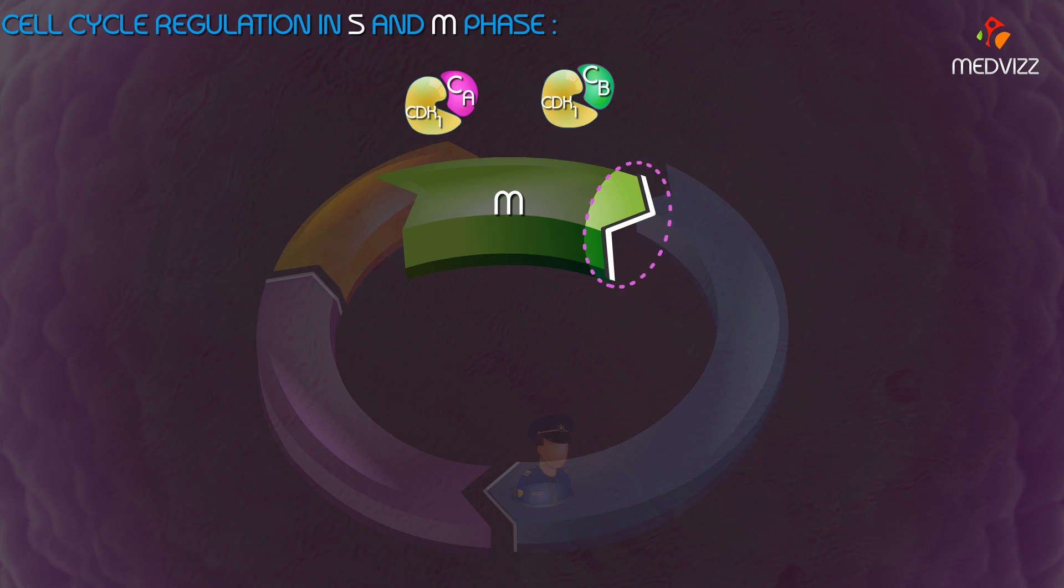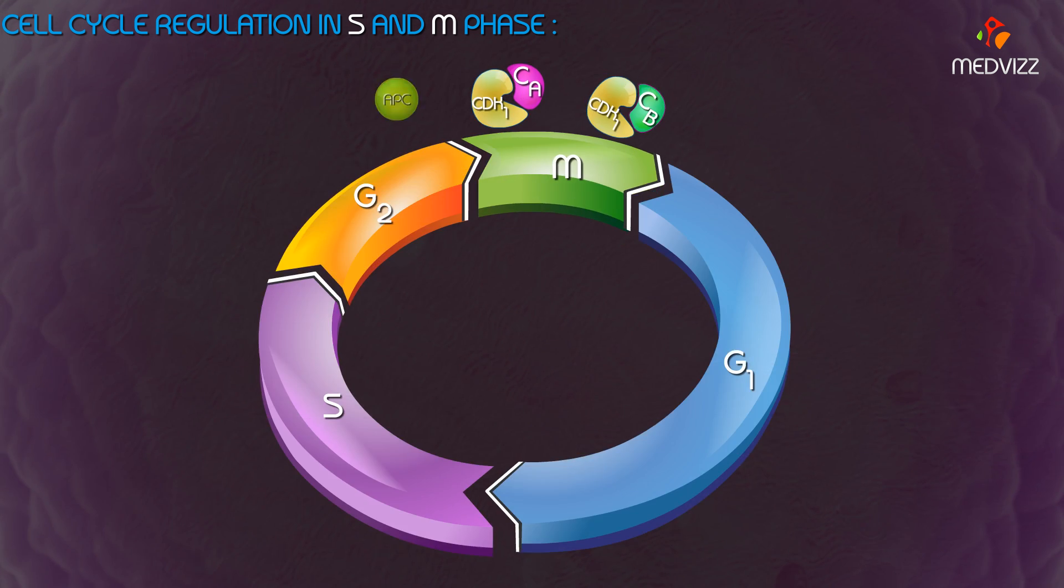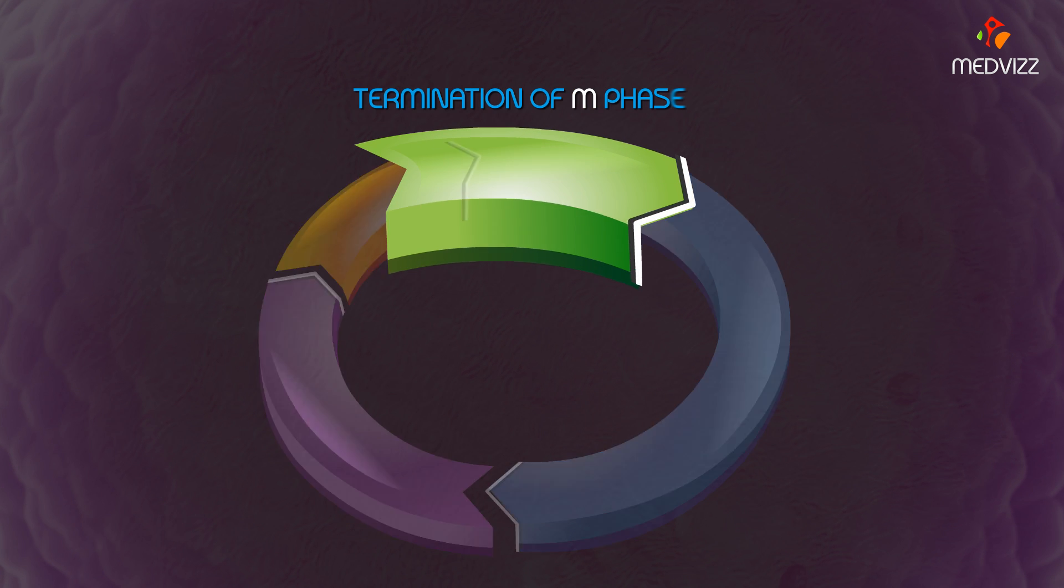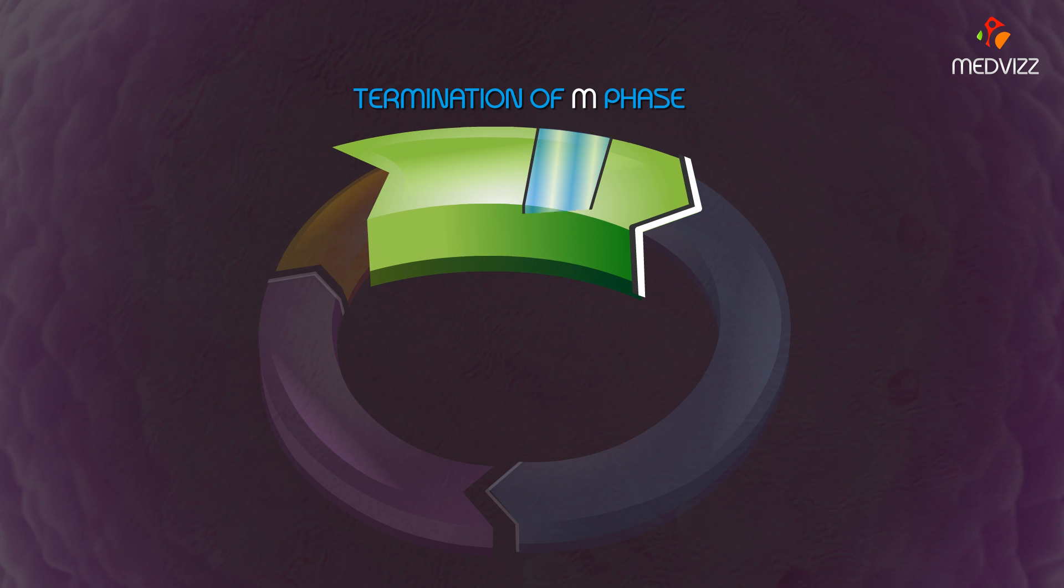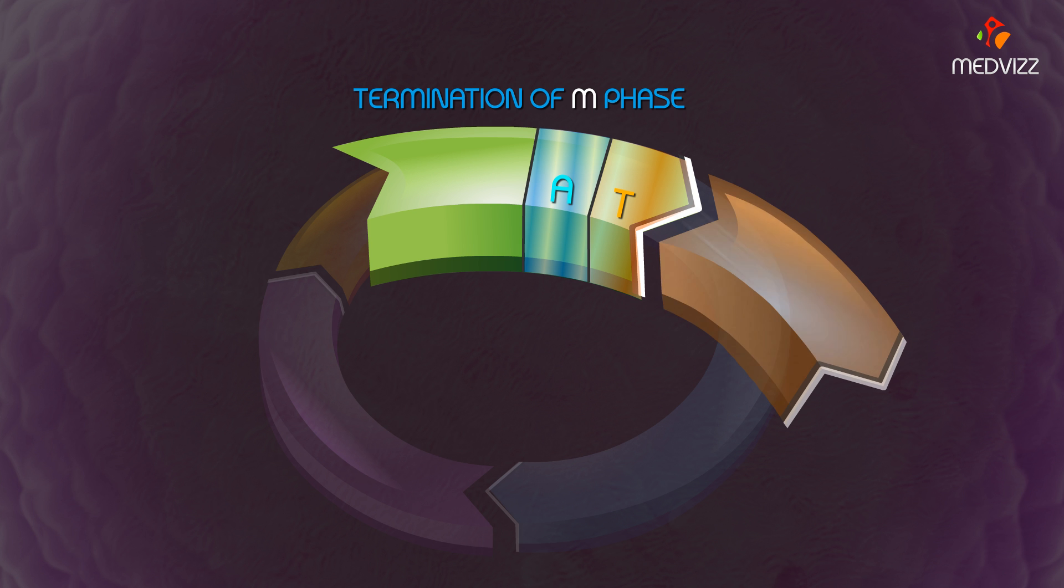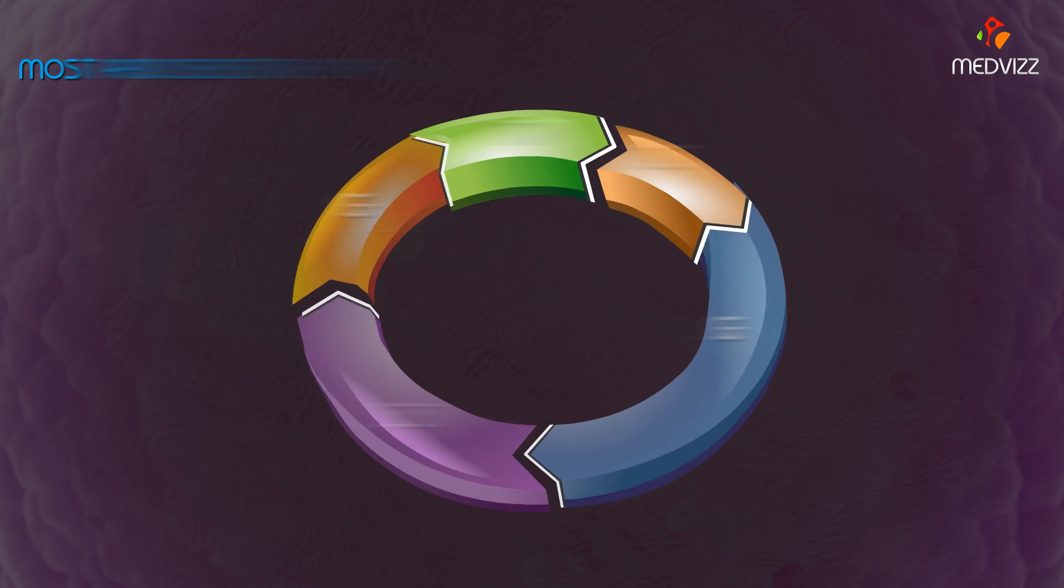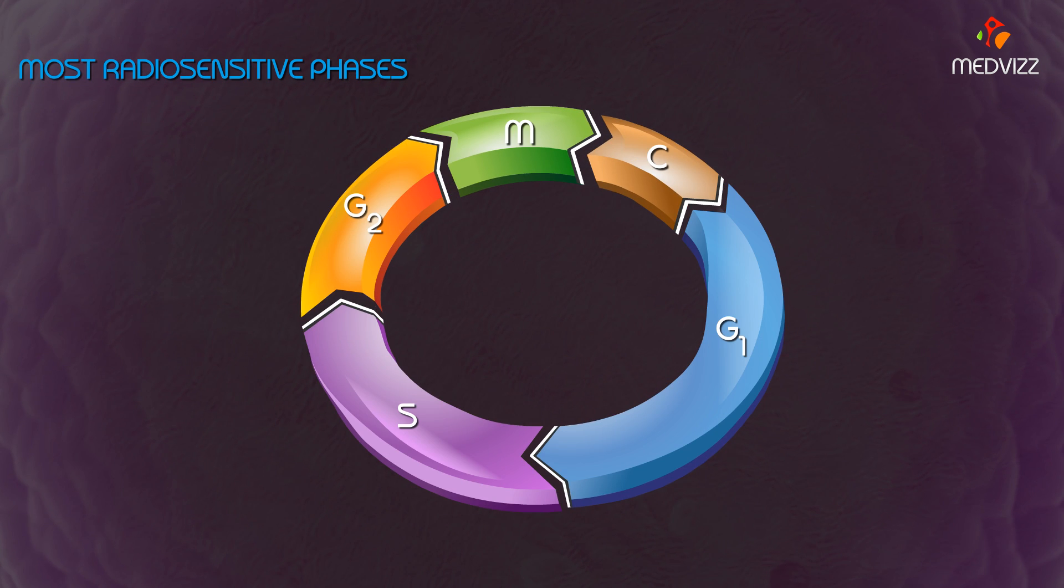Towards the end of mitosis, the anaphase promoting complex causes ubiquitination and destruction of cyclin A/CDK1 and cyclin B/CDK1, which leads to termination of M phase with anaphase, telophase, and cytokinesis.